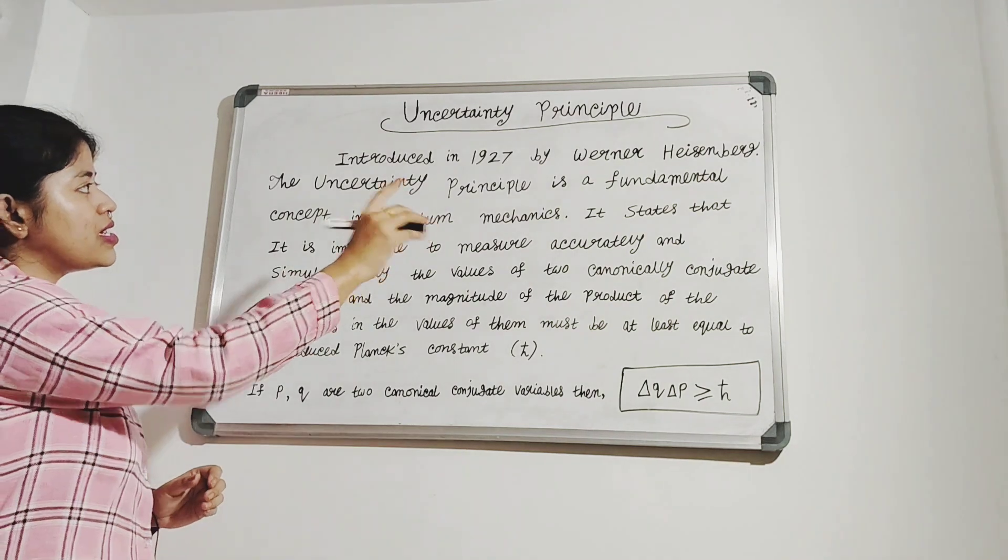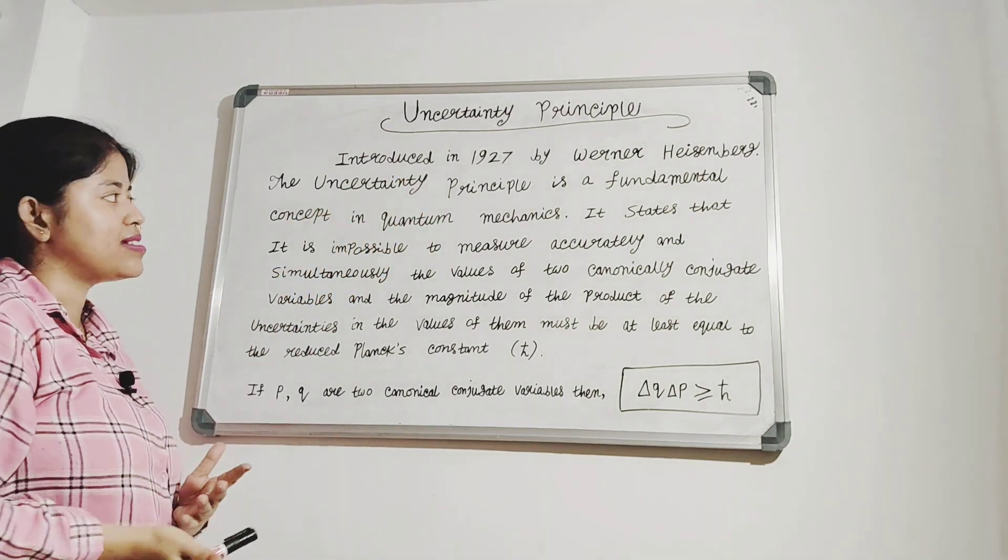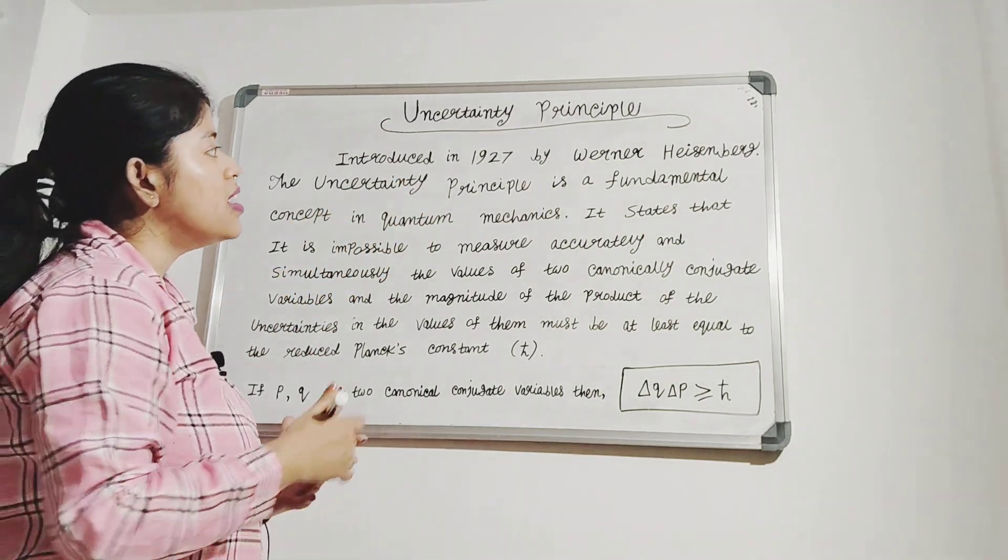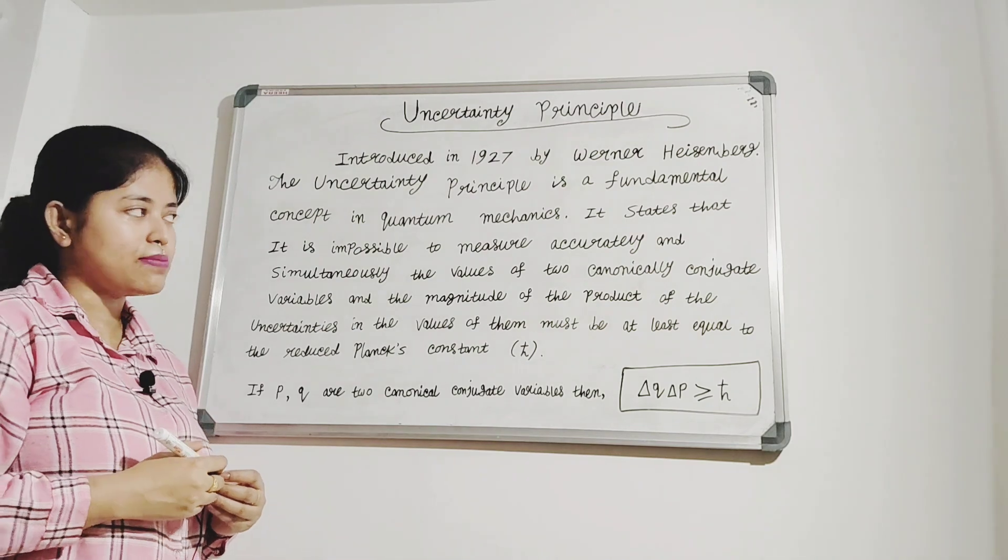The Uncertainty Principle, introduced in 1927 by Werner Heisenberg, is a fundamental concept in quantum mechanics.